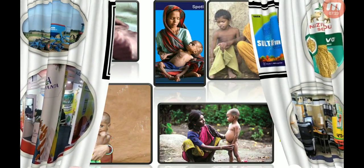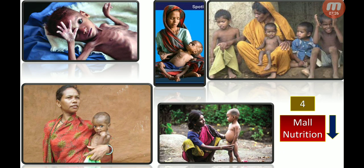The fourth need for agri-entrepreneurship is that it is helpful for people affected by malnutrition. In India, children and women are mostly affected by malnutrition. We can feed them and meet their nutritional needs by adopting agri-entrepreneurship, as it creates a healthy environment, is profitable, and increases production.